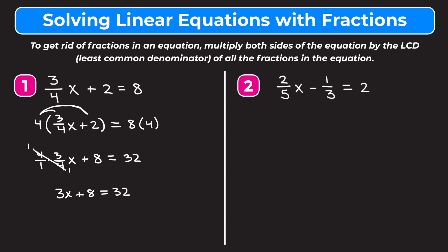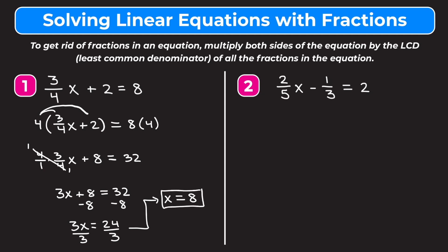Now we can just solve this equation. We're going to subtract 8 from both sides. On the left we're left with 3x. On the right, 32 minus 8 is 24. Finally, divide both sides by 3. On the left we're left with x, and on the right 24 divided by 3 is 8. So we get x equals 8.